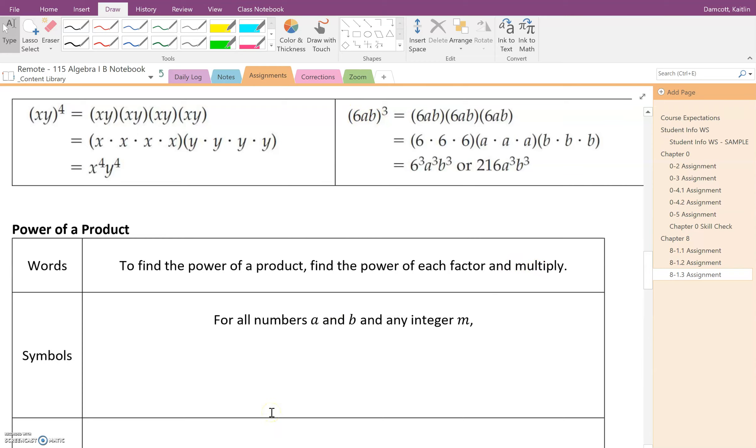So what this looks like, for all numbers A and B and any integer M, it's going to look like this. We've got AB. So I'm multiplying A times B and I'm raising it to the M power. Now all this means is that we are taking this M and distributing it to each of the factors here. So we're going to end up with A to the M power and B to the M power.